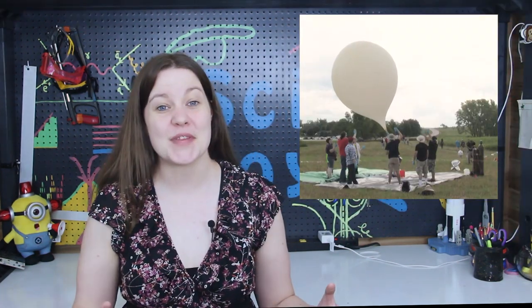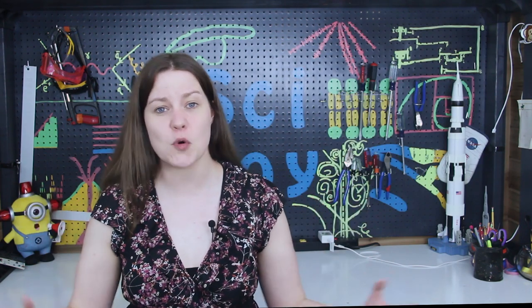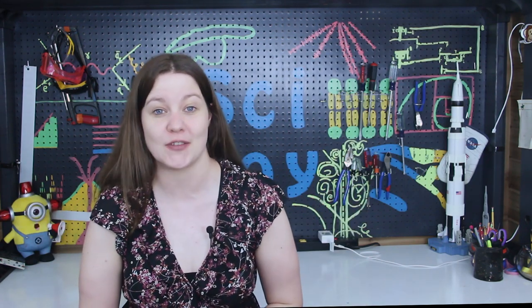Let's talk about how high-altitude balloons fly, how to use burst calculators, and how to determine our maximum altitude. Our 3000 gram balloon would start at 10 feet in diameter on the ground and expand to 43 feet in diameter right before it burst at its maximum altitude.